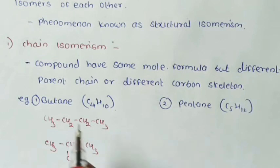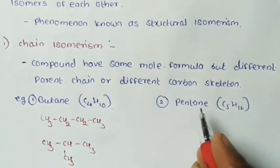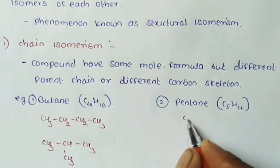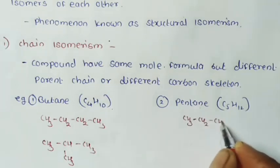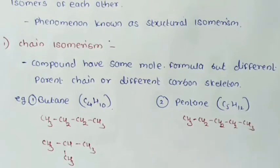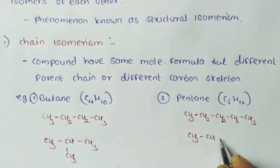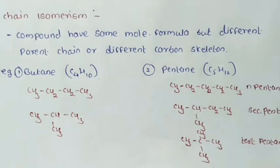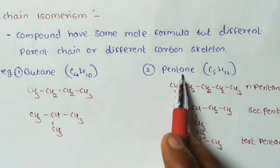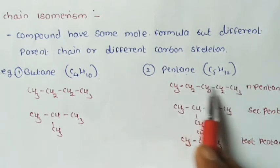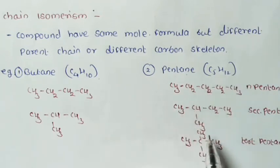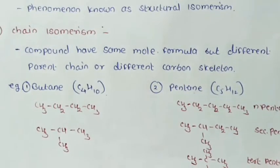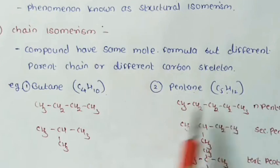Another example is pentane with molecular formula C5H12. It has three chain isomers: first, CH3-CH2-CH2-CH2-CH3 (n-pentane); second, CH3-CH(CH3)-CH2-CH3 (isopentane); and third, C(CH3)4 (neopentane). These are three chain isomers of pentane — molecular formula same but carbon skeleton different.